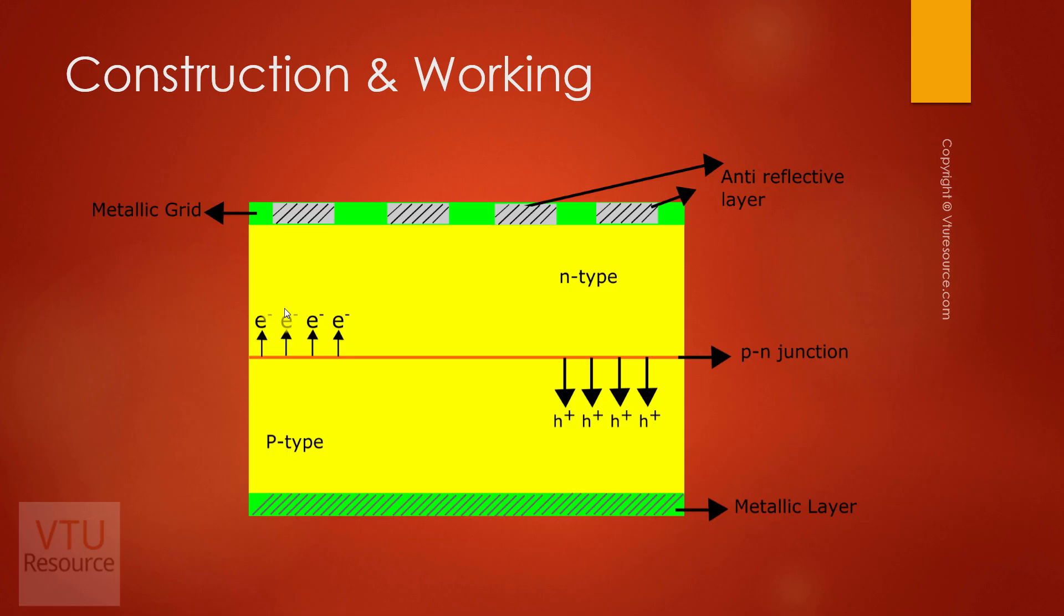PV cells convert light energy into electrical energy. These PV cells are made up of silicon. When we take the cross section of PV cells, it looks like this. PV cell consists of a metallic grid which forms one of the electrical contacts and allows light to fall on the semiconductor diode or PN junction.